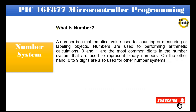What is a number? A number is a mathematical value used for counting, measuring, or labeling objects. Numbers are used to perform arithmetic calculations. 0 and 1 are the most common digits in the number system, used to represent binary numbers. On the other hand, 0 to 9 digits are also used for other number systems.